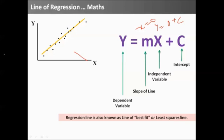So, the point where this line touches the y axis, this distance is c. This regression line is also called the line of best fit or least square line. We will understand it later.